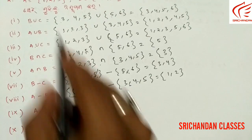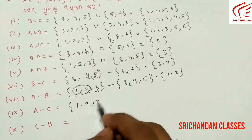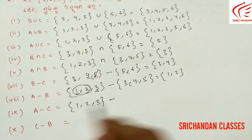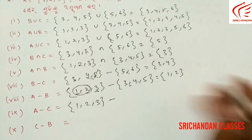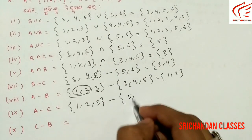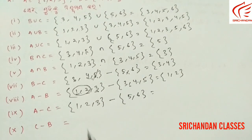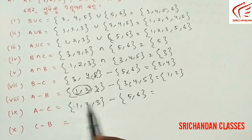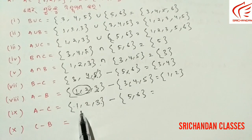Second method: A minus C. A = {1, 2, 3} minus C = {5, 6}. Elements 5 and 6 are not in A at all, so nothing gets cancelled from A. Therefore A minus C = {1, 2, 3}. The answer is 1, 2, 3.